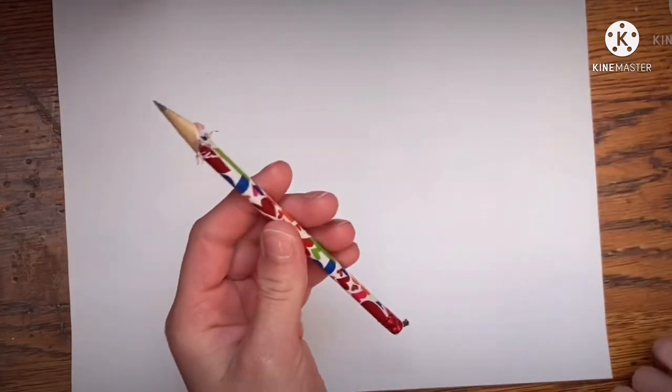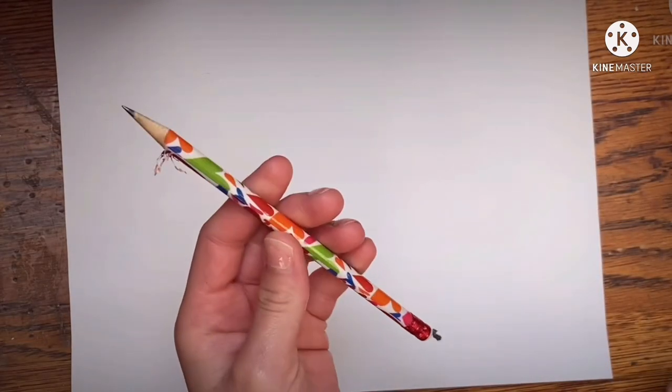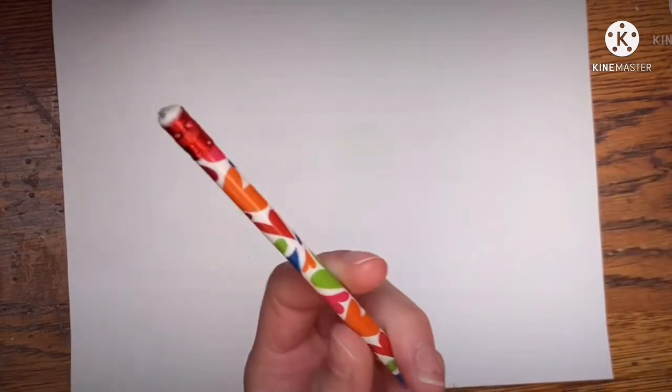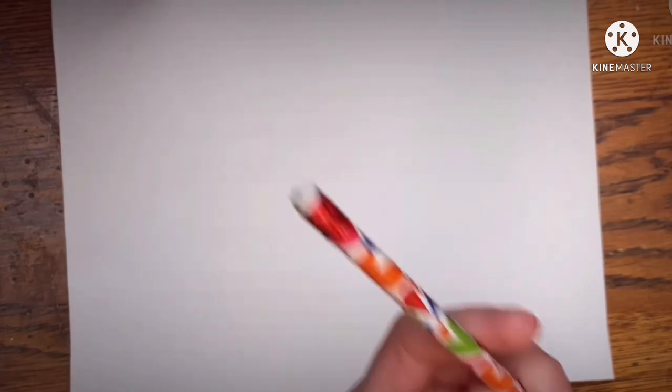However, if you don't have a ruler, anything with a straight edge like a magazine or a book will do, but it has to be something that you can lay down flat on your paper. Don't forget your pencils. They have to be sharpened or you need to have a pencil sharpener nearby and also have an eraser.